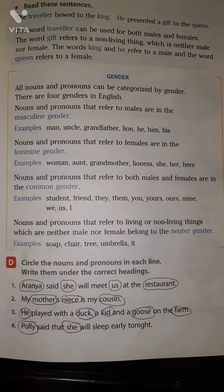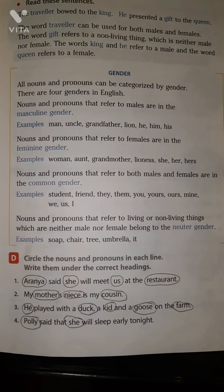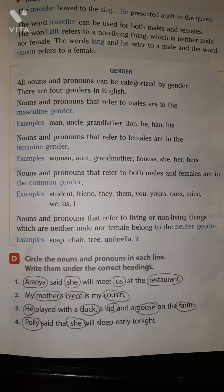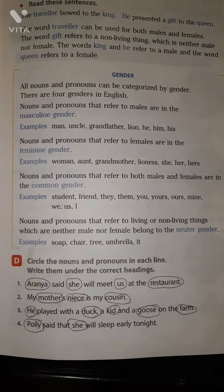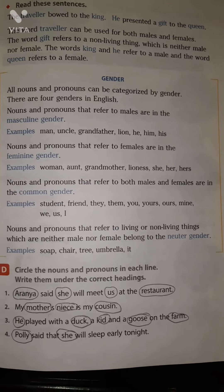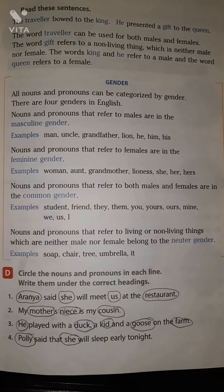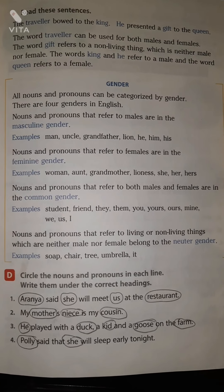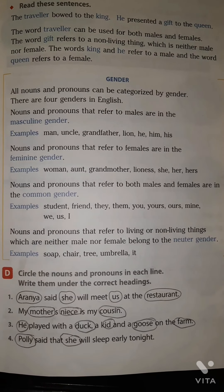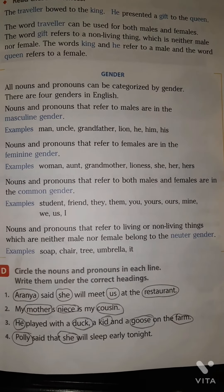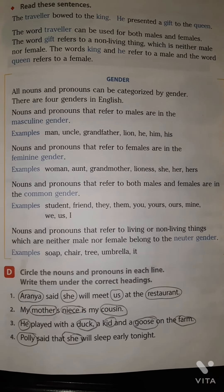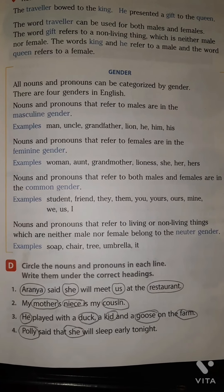Common gender: Nouns and pronouns that refer to both male and female. Examples: student, friend. Pronouns: they, you, yours. Neuter gender: Nouns and pronouns referring to living and non-living things that are neither male nor female. Examples: soap, chair, tree, umbrella. Pronoun: it.